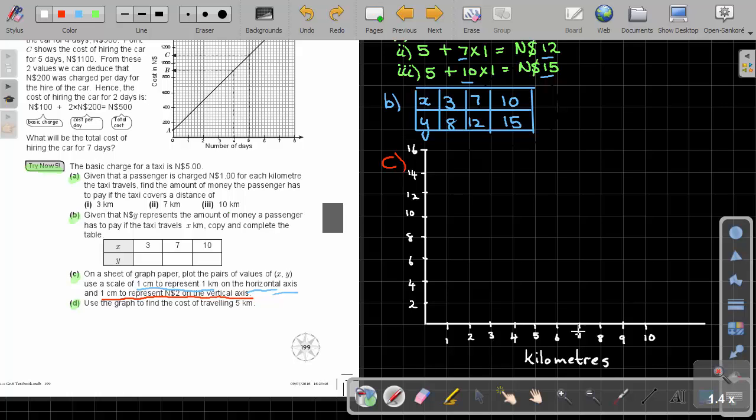And don't forget that this is representing the kilometers. And this is going to be the cost in Namibian dollar. Now we're just going to plot. Now remember, 0 is 5. So if we plot this table, 3 and 8. There. And then 7 and 12. So 7 and 12. There. And then 10 and 15. 10 and 15.